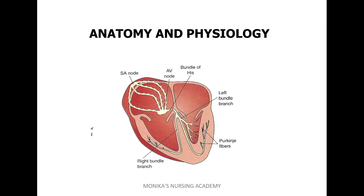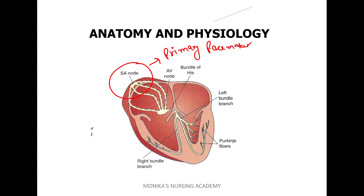Here you can see the image of the conduction system in our heart. The SA node is termed the primary pacemaker. The second one, the AV node, is called the secondary pacemaker.